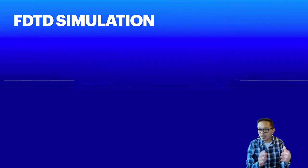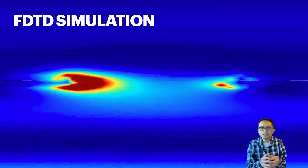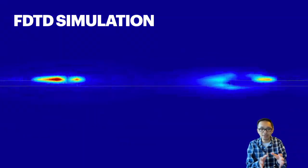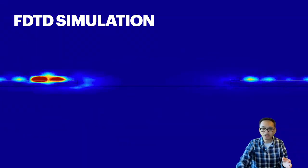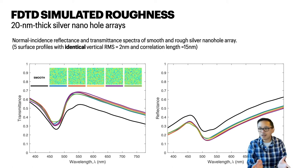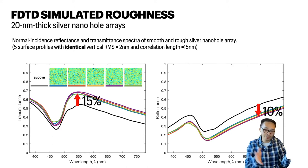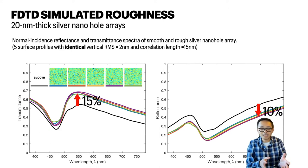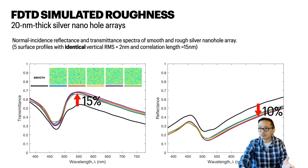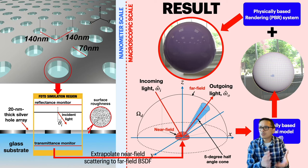We ran pre-FDTD simulations to see how roughness affects the plasmonic nanostructure. The results show the spectral response for reflectance and transmittance. Surprisingly, we found approximately a 50% increase in transmittance and a 10% reduction in reflectance due to roughness, showing that roughness changes reflectance and transmittance values quite drastically.